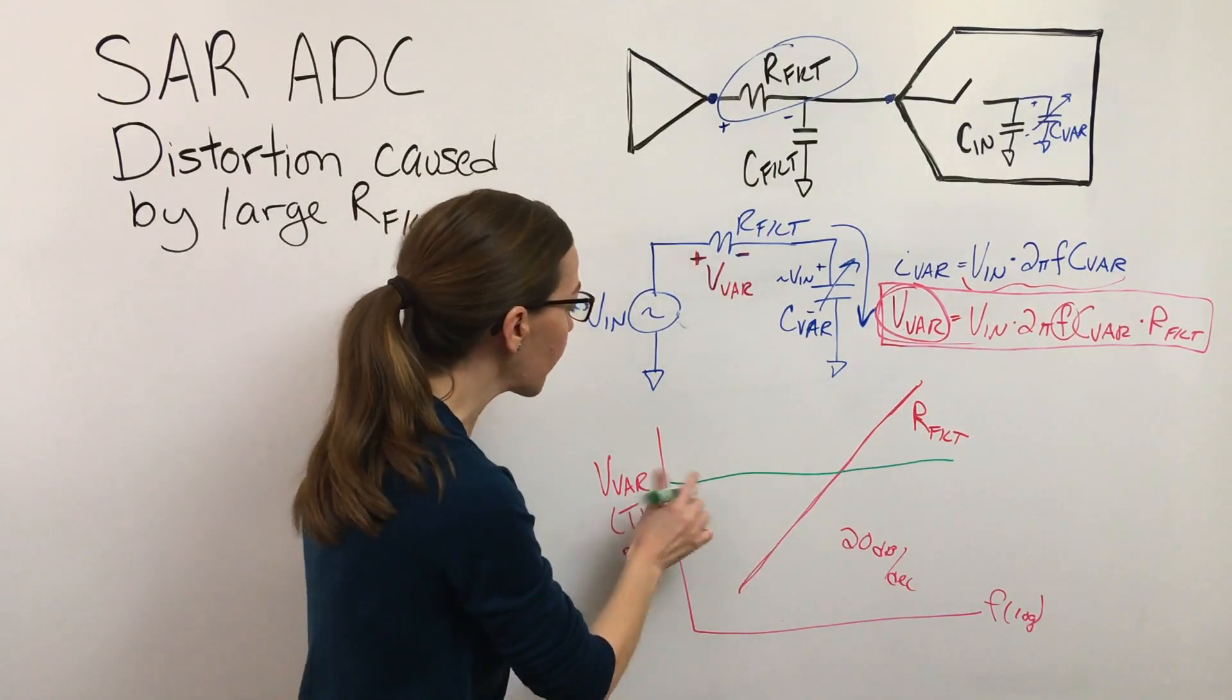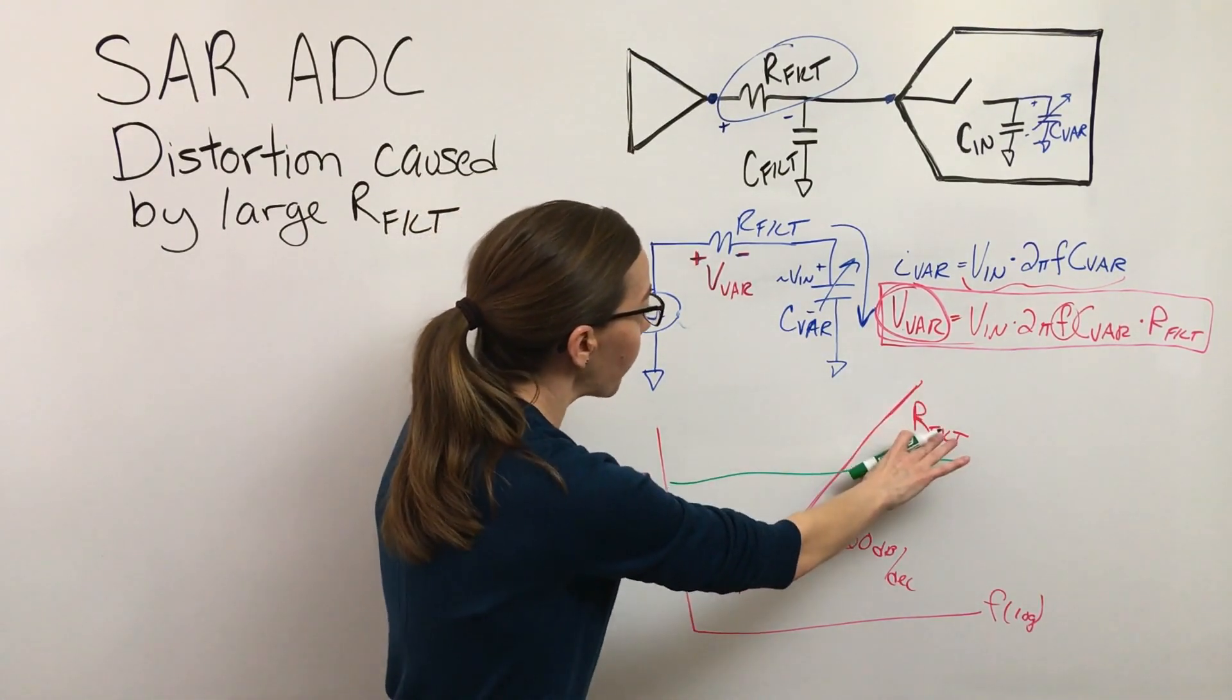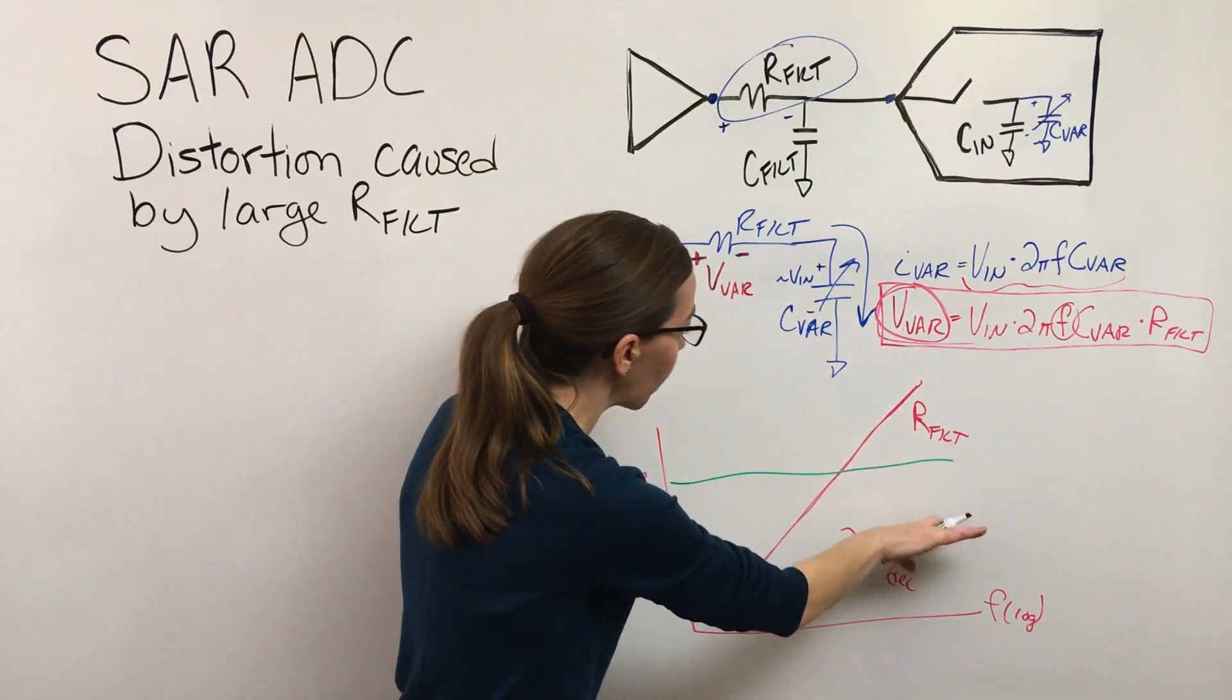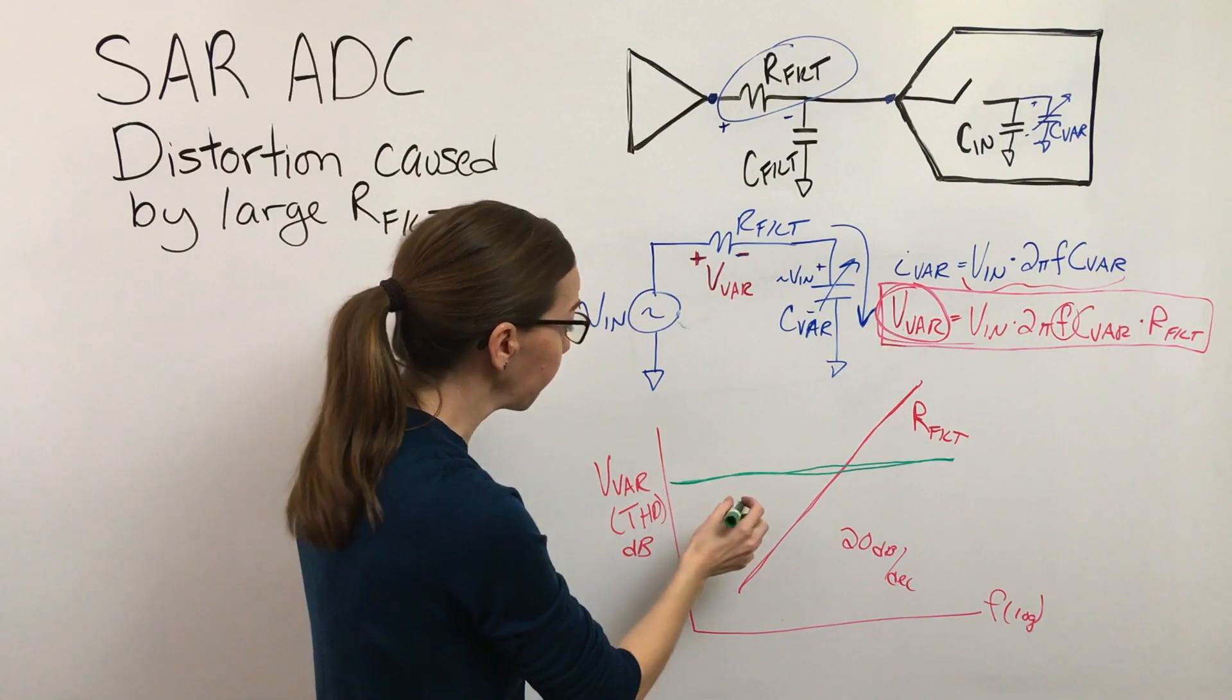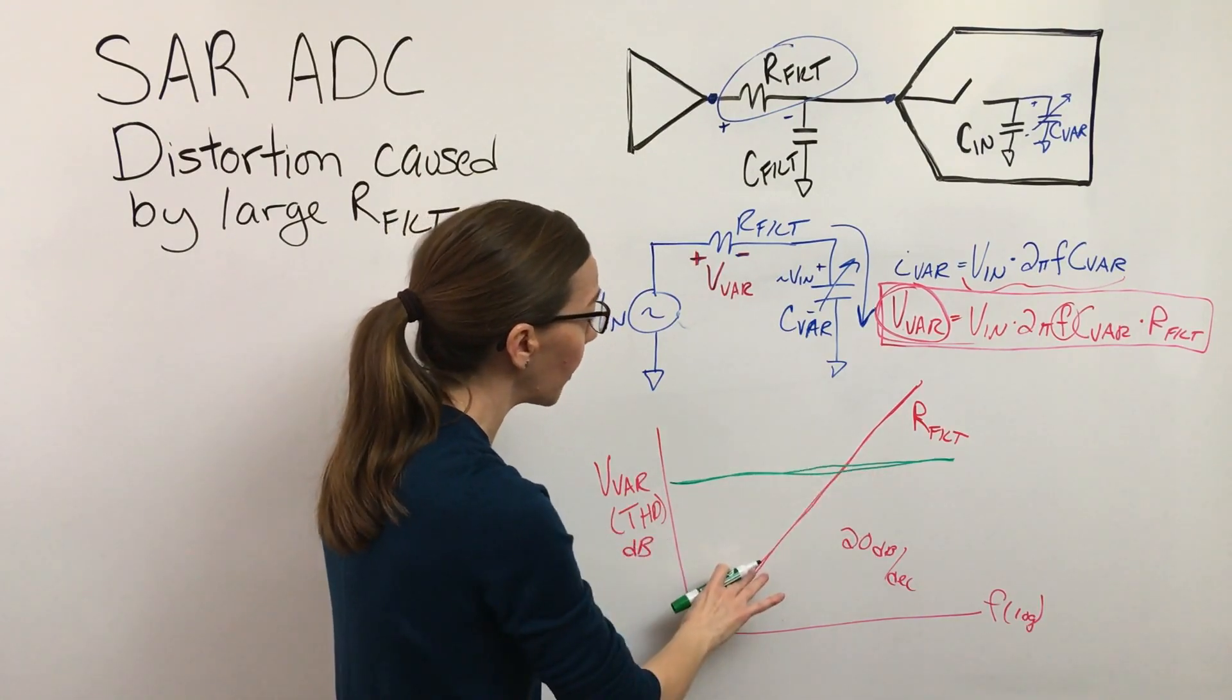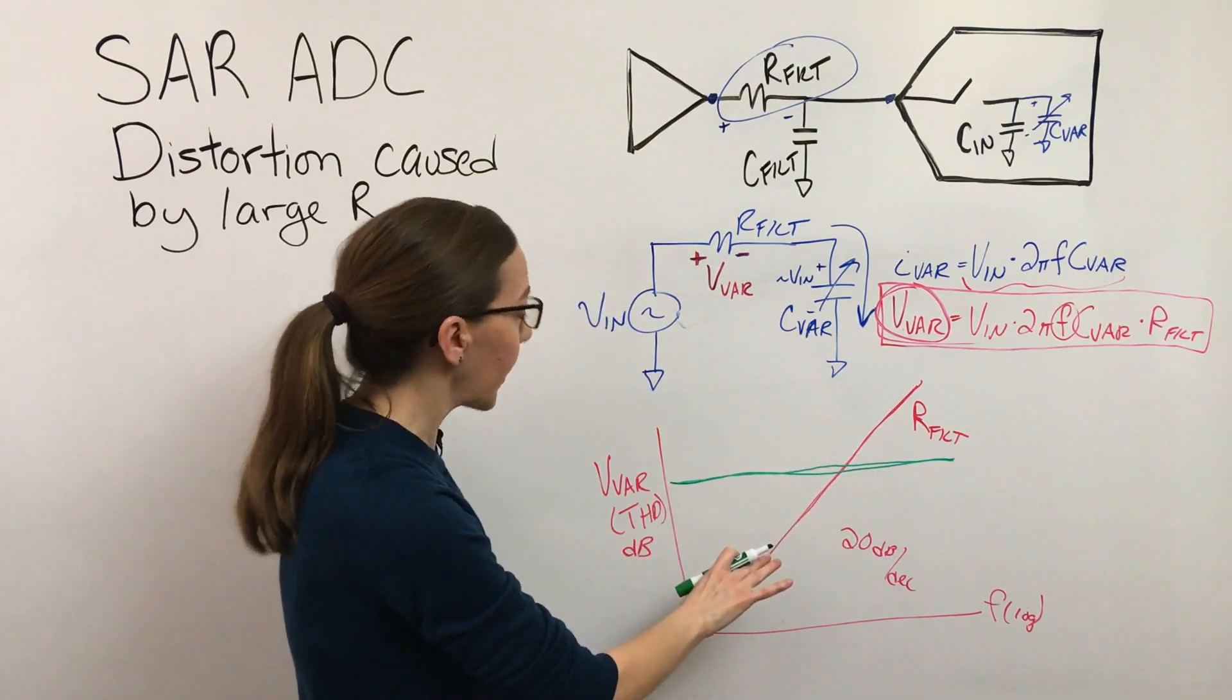The ADC is going to have a distortion that's just inherent to the ADC that's in the data sheet. And so as long as you've sized your resistor so that this curve is falling below the distortion mechanisms elsewhere in the circuit, then this isn't going to be a problem for your circuit.